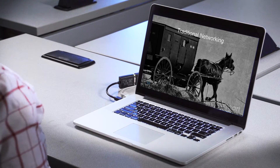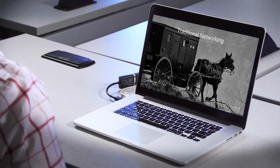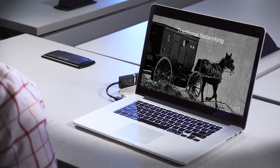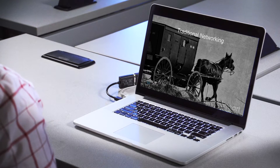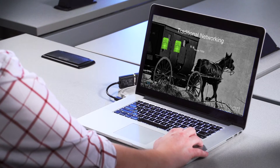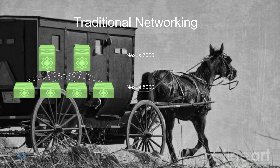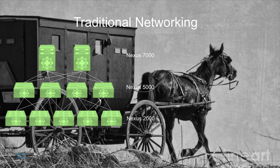Before we get into the architecture of ACI and ultimately the fabric discovery, let's talk about traditional network architecture real quick. Generally this is going to look like some sort of core aggregation and access switches — perhaps something like Nexus 7000 switches at the core, Nexus 5000 switches at the aggregation layer, and Nexus 2000 switches at the access layer.